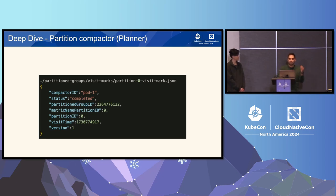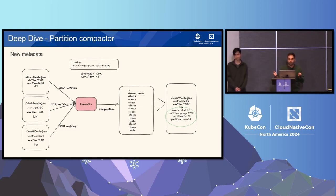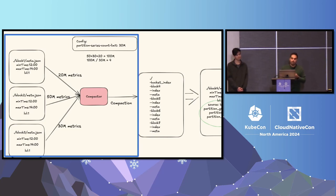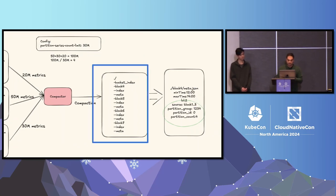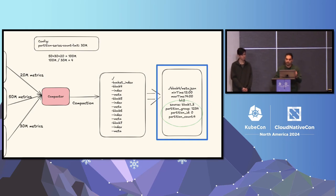It's now very easy to get information about how many compactions remain in the queue. Putting everything together: a new configuration tells us the desired partition size — for example, 30 million time series per partition. The block metafile already contains how many time series are in a block. So if three blocks together have 120 million time series and you configure 30 million per partition, you'll get four partition counts. Before, compaction produced just one output block; now it produces four blocks — blocks four, five, six, and seven — each with their own index and metafile, all with the partition group information embedded.